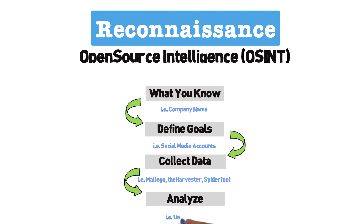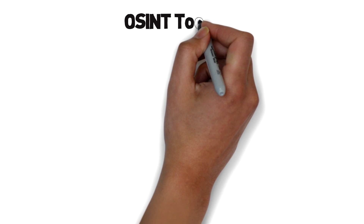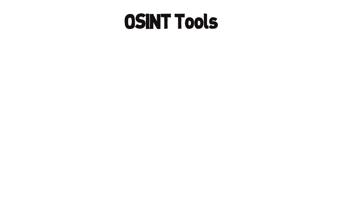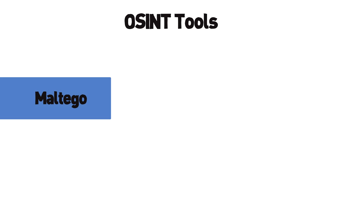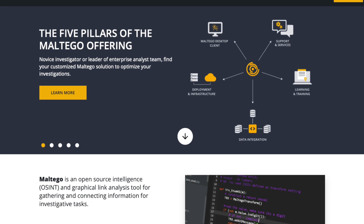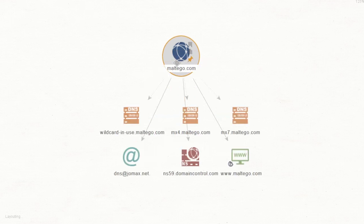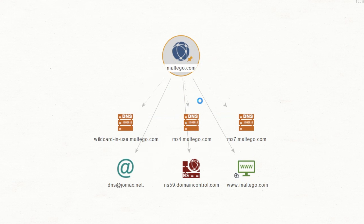Next, we analyze the data we collected and, in some cases, use what we found as a starting point for further analysis. For this video, we're going to focus on the tools and resources we can use to collect and analyze public data, particularly with understanding what tools can be used for different types of information. Perhaps the best place to start is with the OG of open-source intelligence: Maltego.